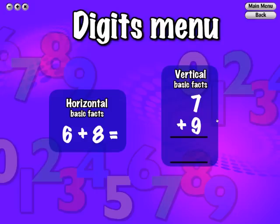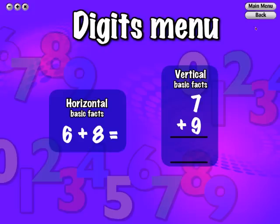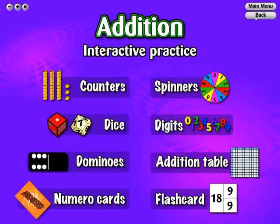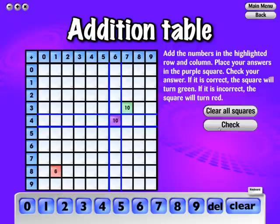Digits gives you the option of horizontal or vertical format. From the Addition Table, randomly pick any square to answer. If an answer is correct, the square will turn green. If the answer is incorrect, the square will turn red, and the question will be left in the bank to be answered again at another time.